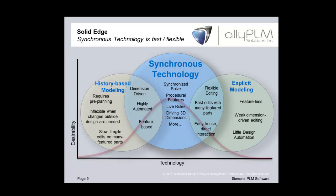With history-based modeling — the old parametric technology — you need pre-planning: do I fully constrain this sketch, does this round feature come before or after the cutout? The order and parent-child relationships in the history tree are very important, requiring a lot of pre-planning. Because of those relationships, it can be inflexible when drastic changes are made — not all features can recompute automatically. The good things about history-based modeling are that it's dimension-driven, highly automated, and feature-based.